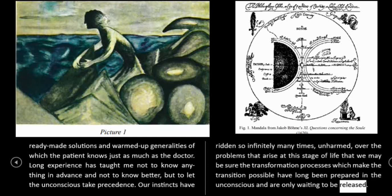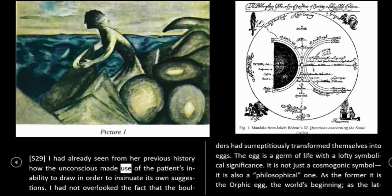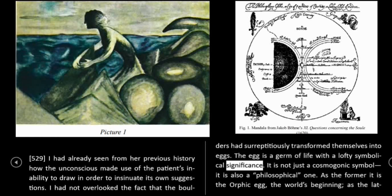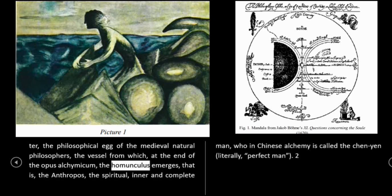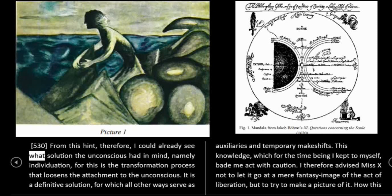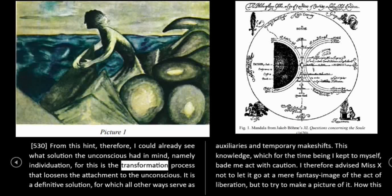529: I had already seen from her previous history how the unconscious made use of the patient's inability to draw in order to insinuate its own suggestions. I had not overlooked the fact that the boulders had surreptitiously transformed themselves into eggs. The egg is a germ of life, with a lofty symbolical significance. It is not just a cosmogonic symbol, it is also a philosophical one. As the former it is the Orphic egg, the world's beginning; as the latter, the philosophical egg of the medieval natural philosophers — the vessel from which, at the end of the opus alchemicum, the homunculus emerges, that is, the anthropos, the spiritual, inner, and complete man, who in Chinese alchemy is called the qinyen, literally, perfect man. 530: From this hint, therefore, I could already see what solution the unconscious had in mind, namely individuation, for this is the transformation process that loosens the attachment to the unconscious.